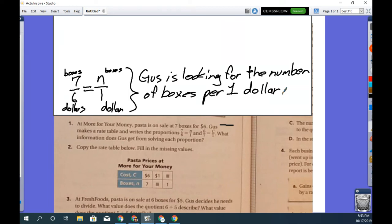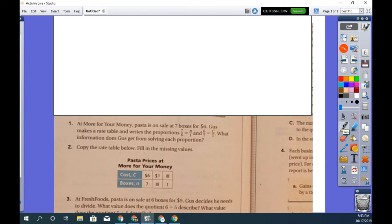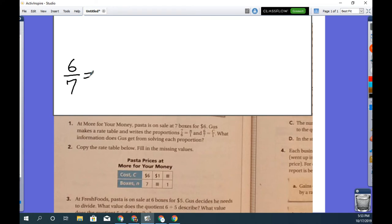Okay, now we're going to do the same thing for the other proportion. All right, so pause it here if you need to write that down. For the other proportion he has things seemingly written in reverse. We have six over seven equals a new variable over one. And again, going back to what c is, c is cost in dollars.